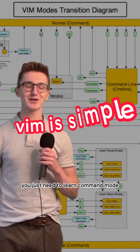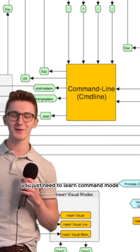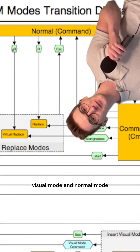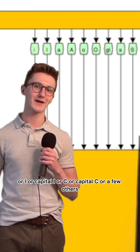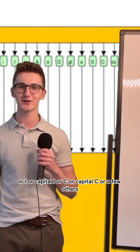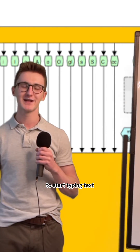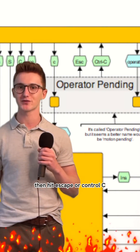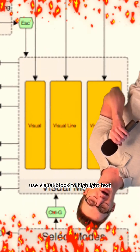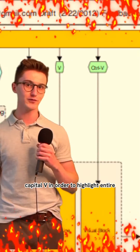Vim is simple. You just need to learn command mode, insert mode, visual mode, and normal mode. To start typing text, you can use I, capital I, C, capital C, or a few others. Then hit Escape or Ctrl+C in order to go back to normal mode. You can use visual block to highlight text, or capital V in order to highlight an entire line.